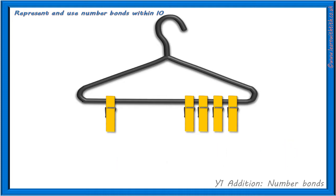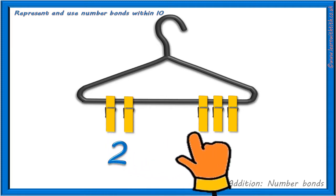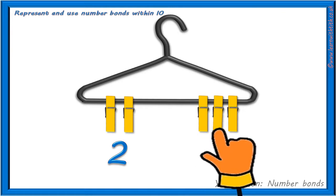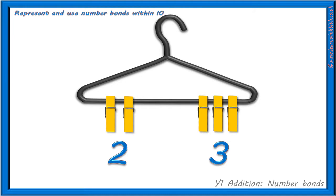Now, let's split our 5 pegs into 2 different groups like this. This time we have 1, 2 pegs on the left and 1, 2, 3 pegs on the right. How could we write this as a sum? We could write 2 add 3 equals 5 pegs.